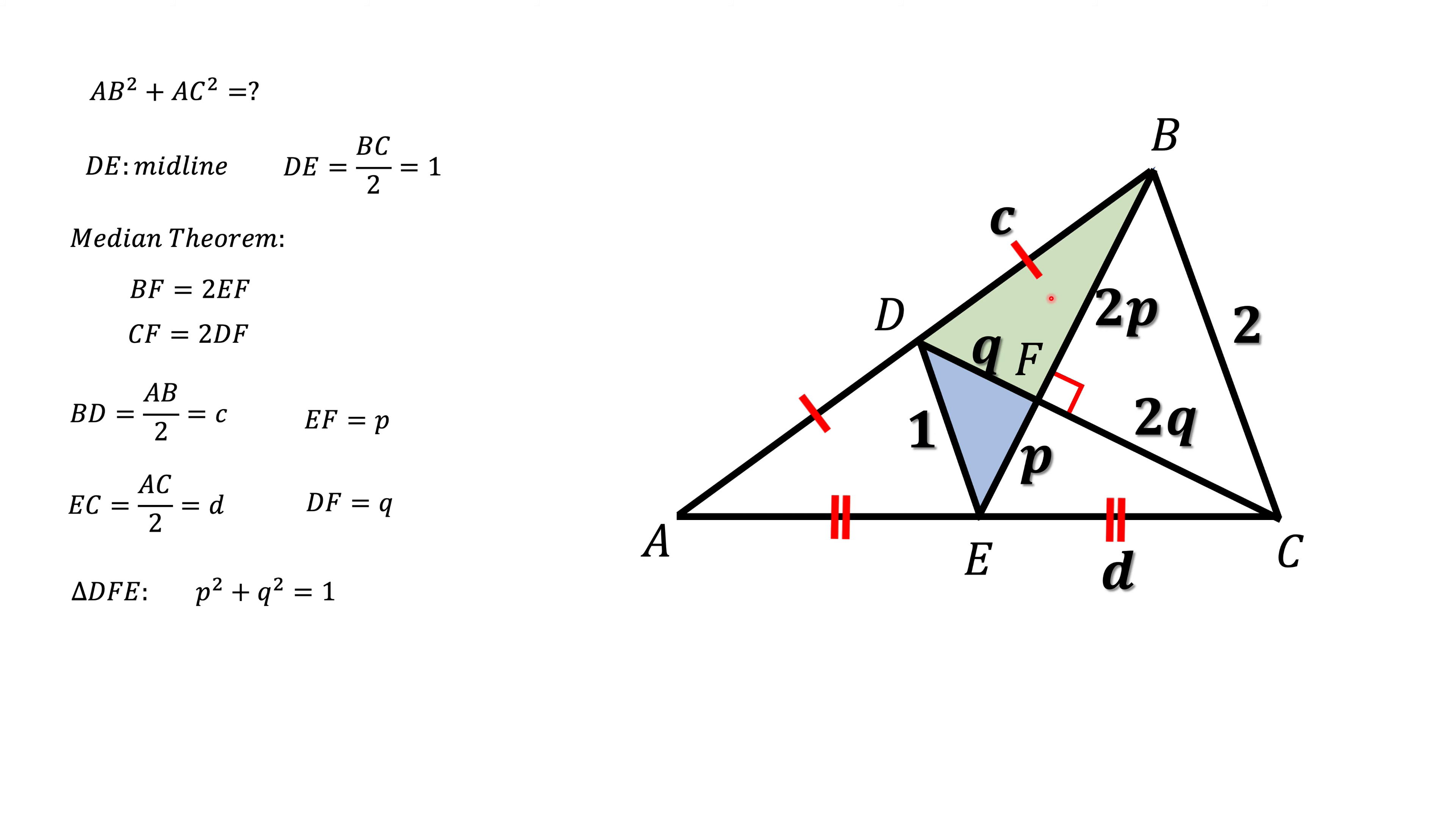Next we consider this green triangle, and again apply Pythagorean theorem here, so we get Q squared plus 2P squared equals C squared.